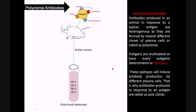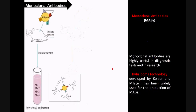These epitopes induce antibody production by different plasma cells. That is why antibodies produced in response to an antigen are called polyclonal. In the serum, we will be getting a mixture of antibodies against different epitopes, and you can see that different antibodies will bind to this antigen.